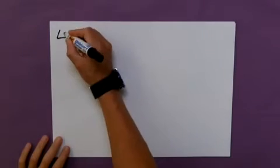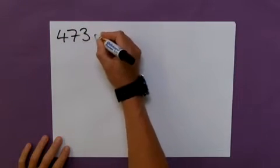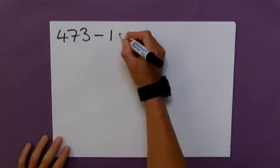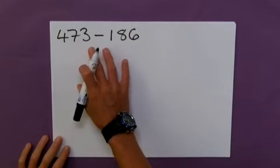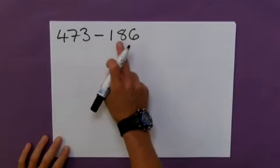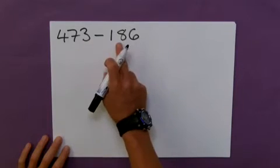I'm going to apply the counting-on method of subtraction to a more complex question. And this is just such a brilliant way to help your child understand exactly what subtraction is. It is the difference between the two numbers, the gap between the two numbers.